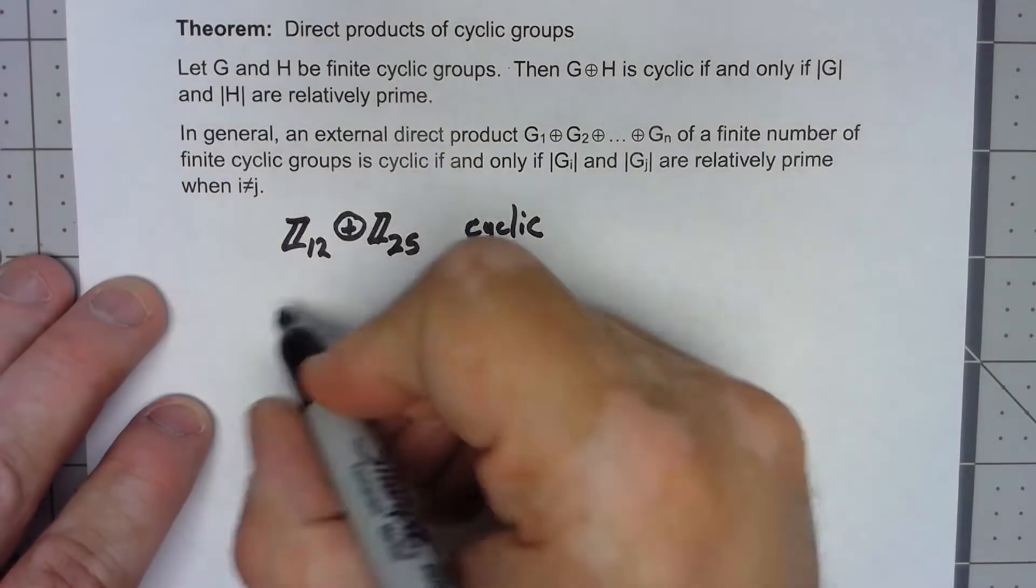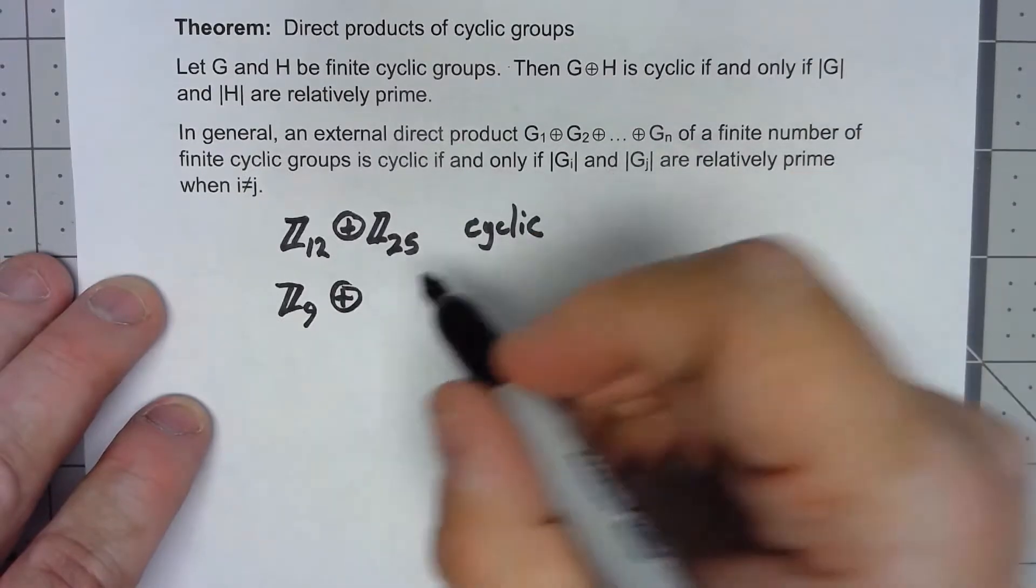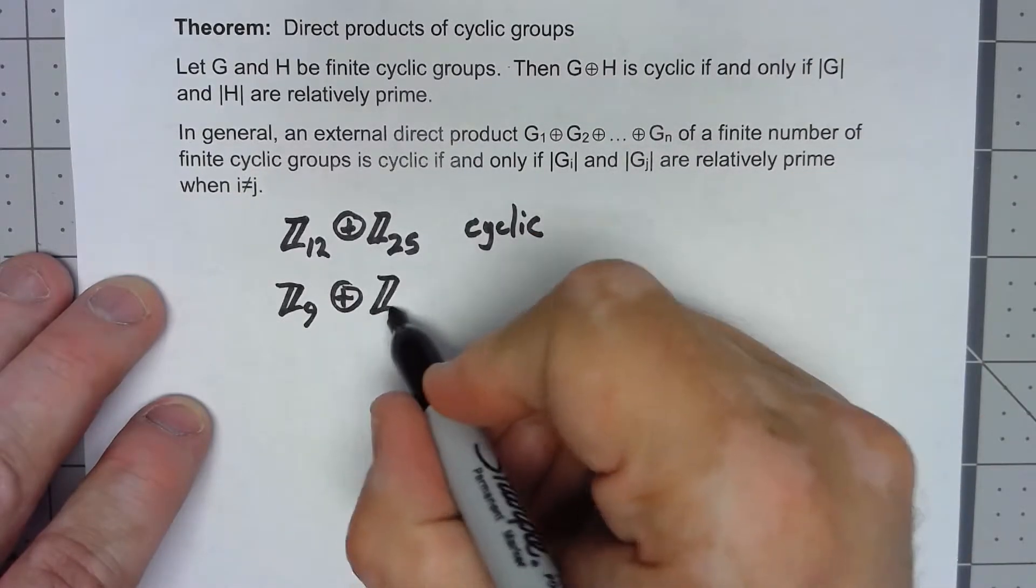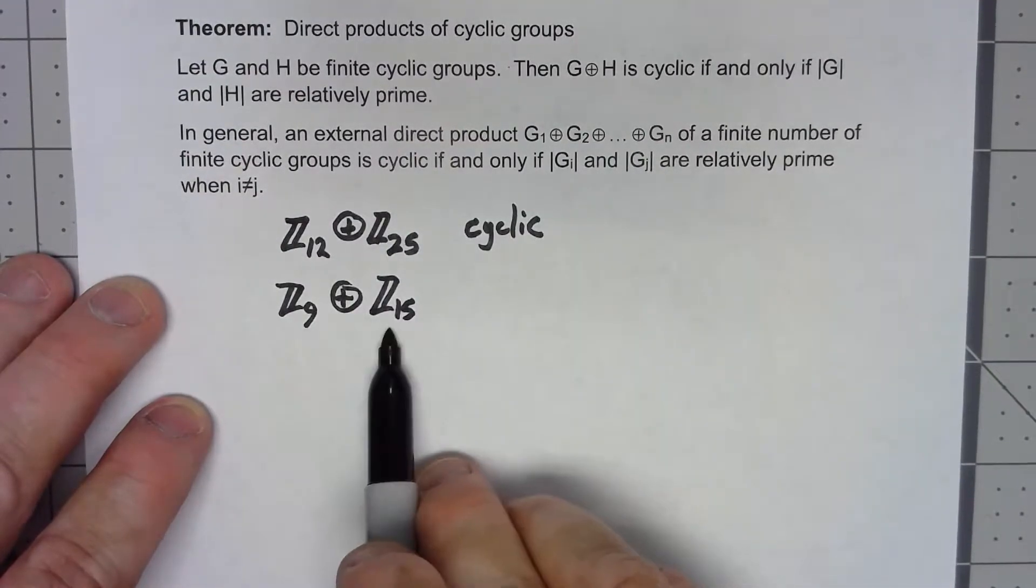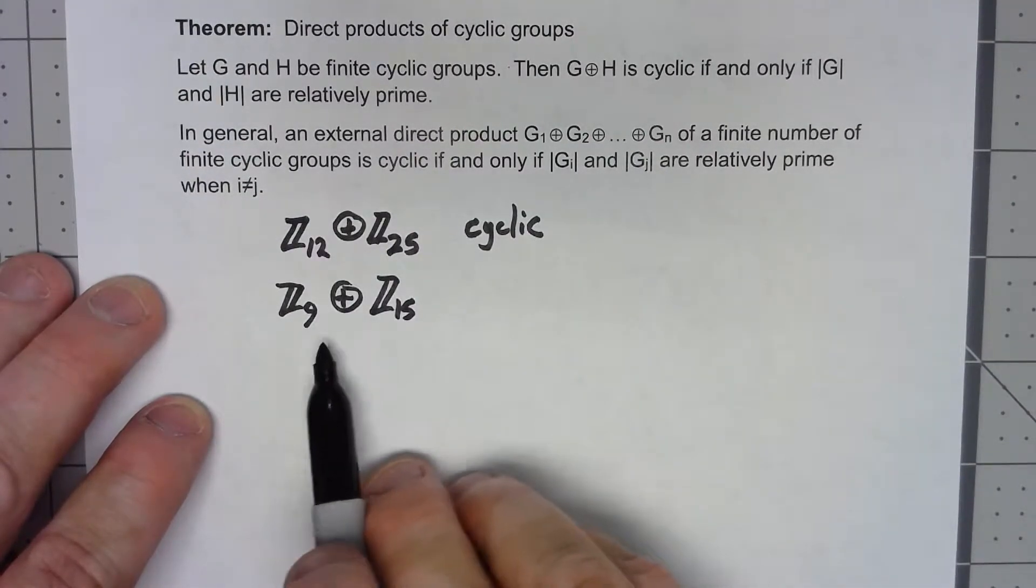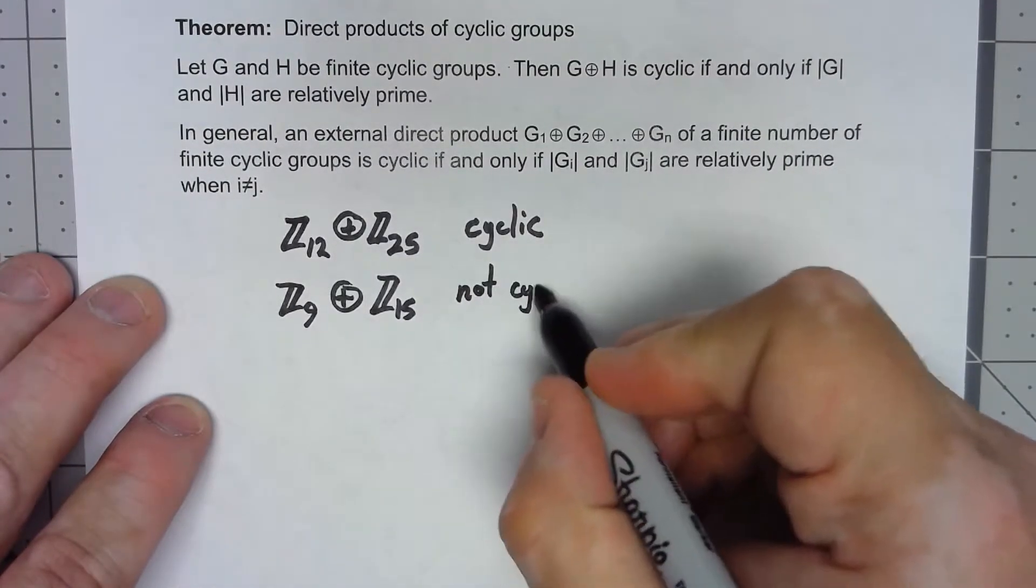On the other hand, if I had something like Z9 direct product with Z15, even though those are two cyclic groups, when I take the direct product, those things are not relatively prime, so it's not going to be cyclic.